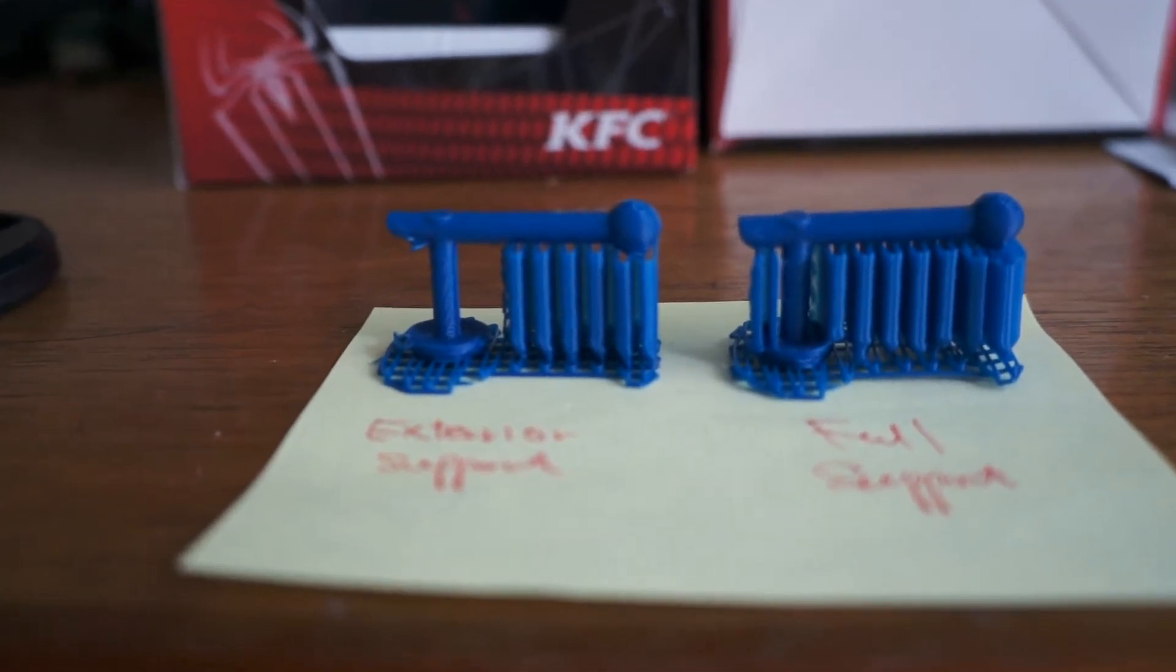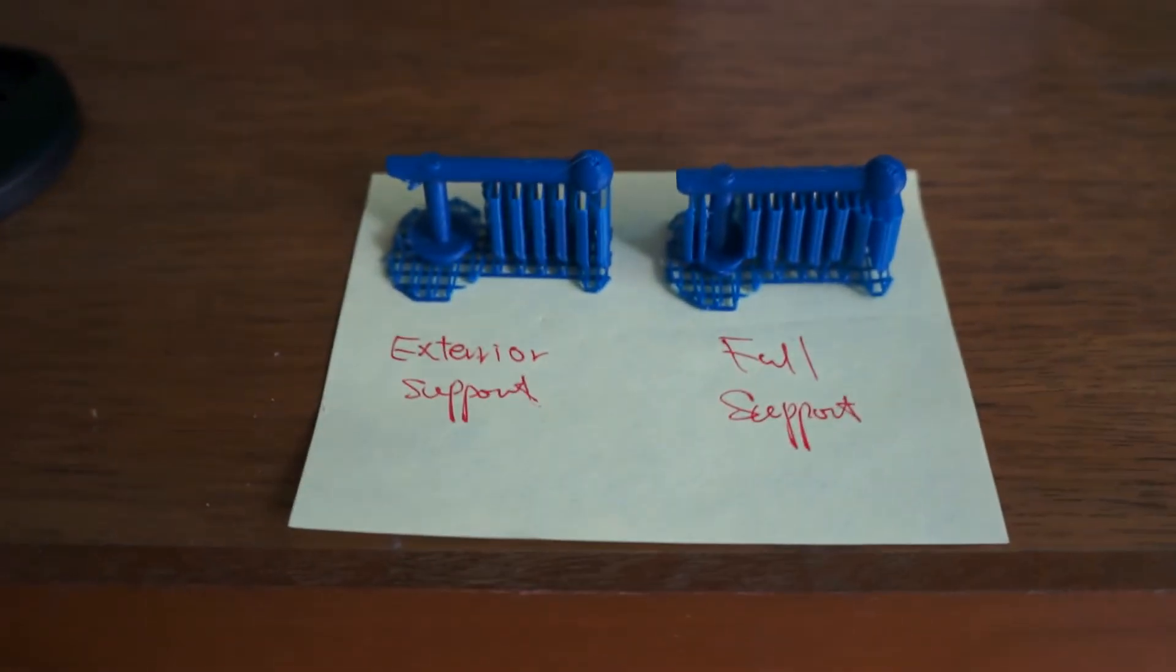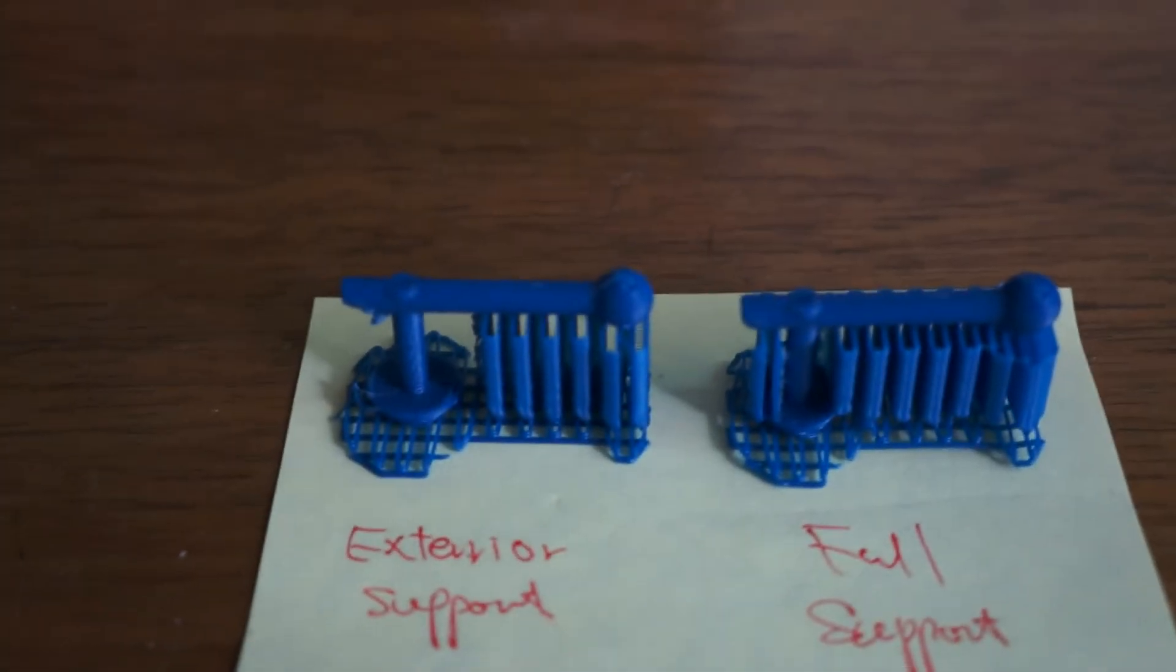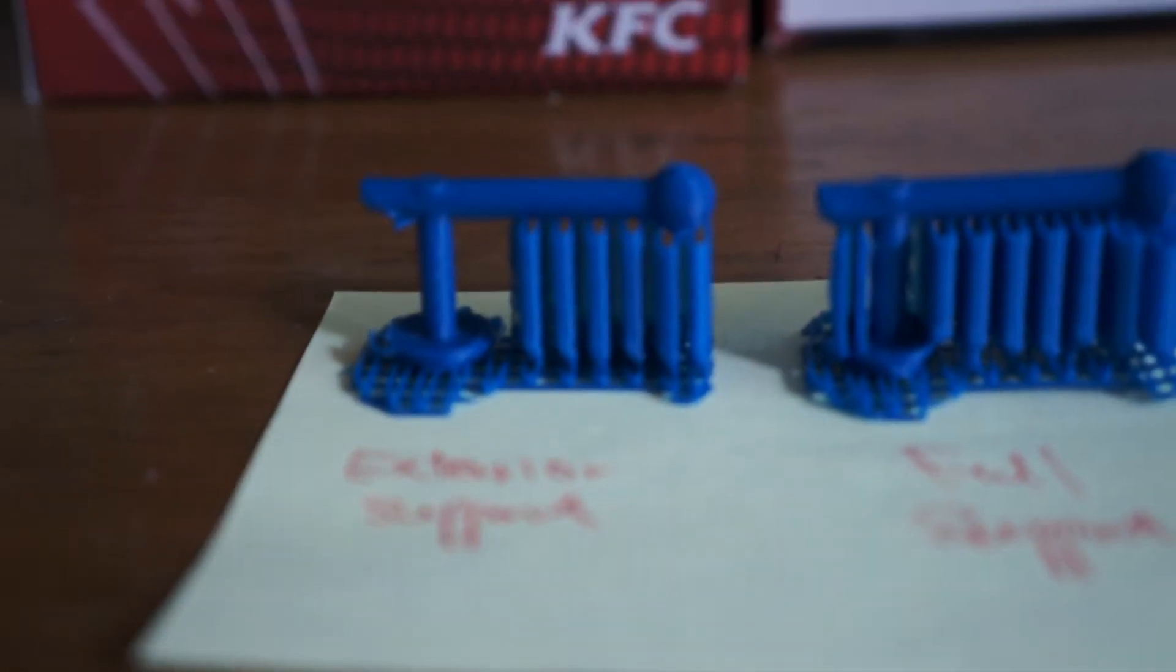So there are two choices. One is exterior support. That means if the part of the product is without the necessary support, then Replicator G will help to generate this particular part.